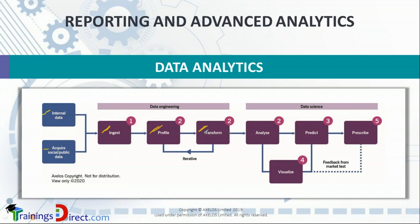Transformation is much different from ingestion, which is the loading part, and profiling, which is classification and keeping data ready for analysis. Transformation moves data into a totally different format. For example, the profiled data may need to be read by a machine learning program, which expects a certain format. We may need software to transform the profiled data into a format readable by Python, which is used extensively for machine learning.